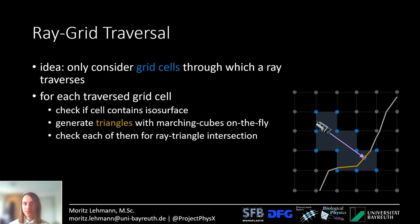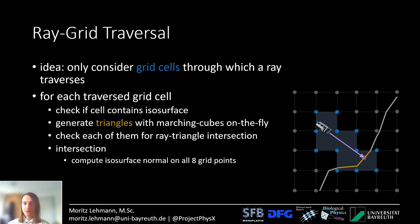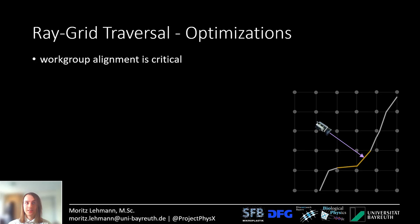You then check each of the up to five triangles for intersection with the ray. If there's an intersection, you compute the isosurface normal on all of the grid points surrounding the cell, and then interpolate the surface normal to the intersection point. Let's talk optimization. The alignment of the workgroups is critical — if you align the workgroups as stripes on the bitmap, you will get coalesced access on the bitmap itself.